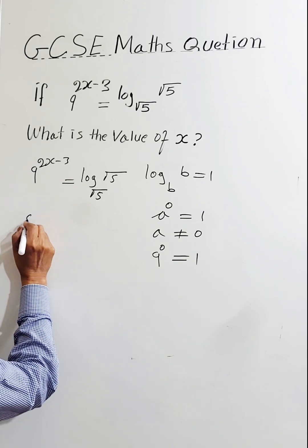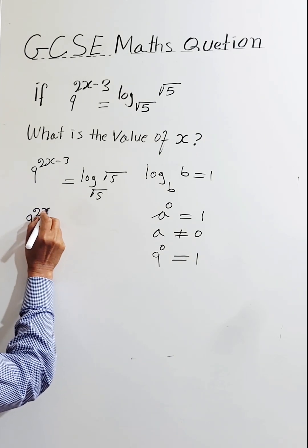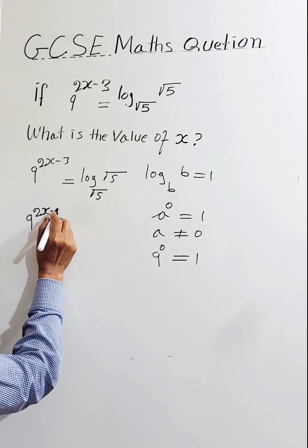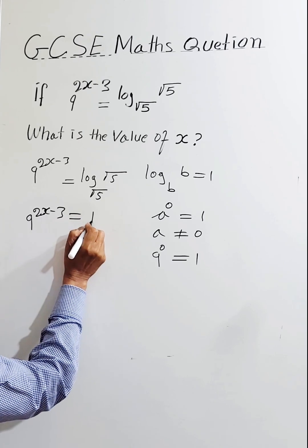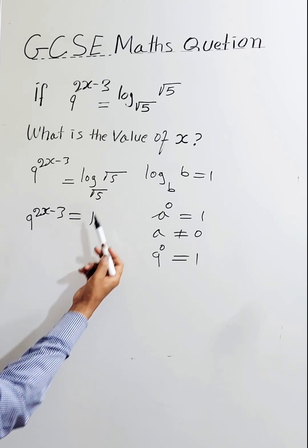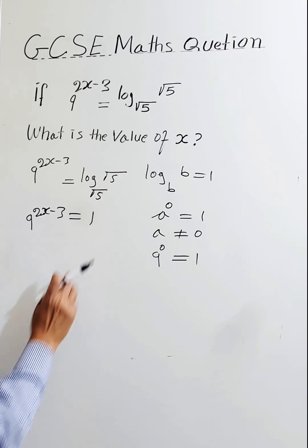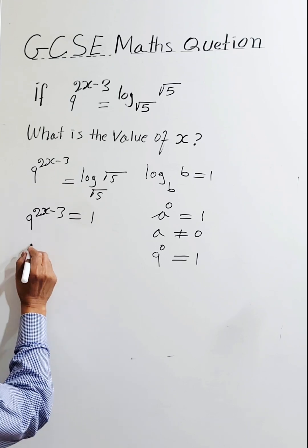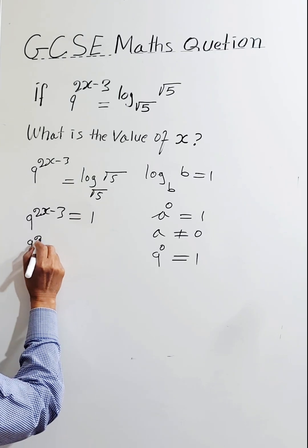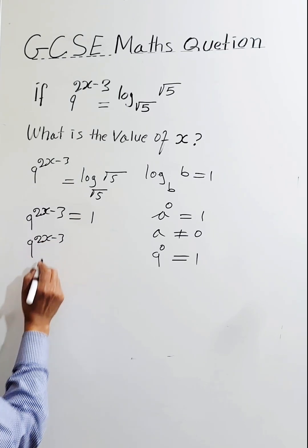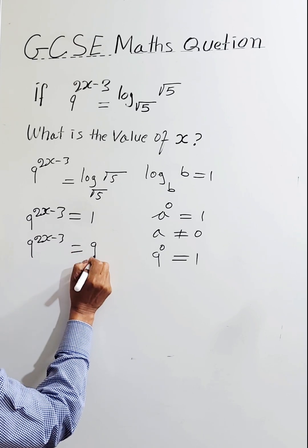So 9 to the power of 2x minus 3 equals 1 because the base and the argument is the same.